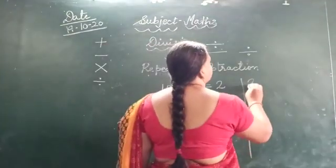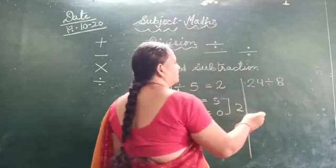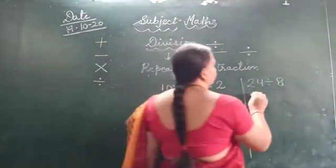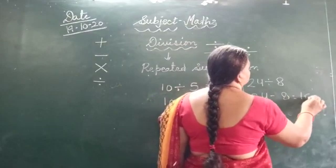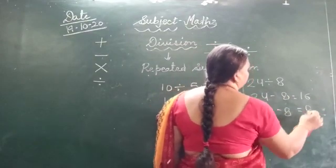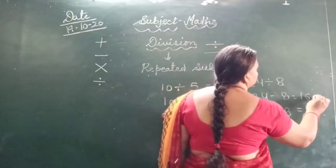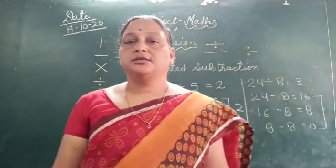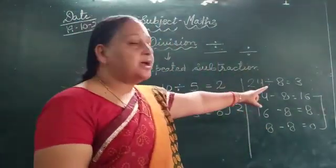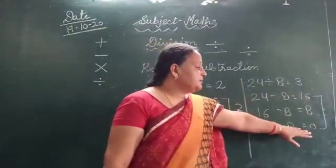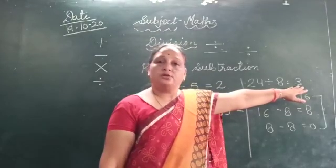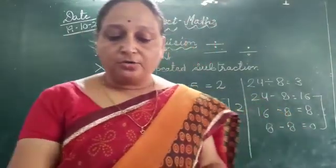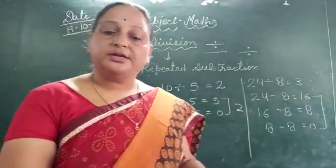Let's take one more number: 24 divided by 8. If you know the 8 times table, it helps. Using repeated subtraction: 24 minus 8 is 16, 16 minus 8 is 8, and 8 minus 8 is 0 — so 3 times. Using the table: 8 ones are 8, 8 twos are 16, 8 threes are 24 — again 3. The answer is 3. First learn the repeated subtraction method, then we will also look at how to divide into equal dot groups.